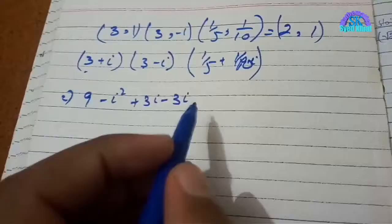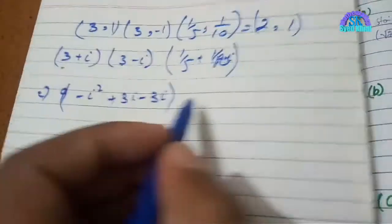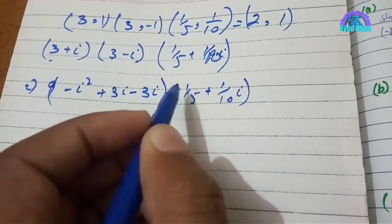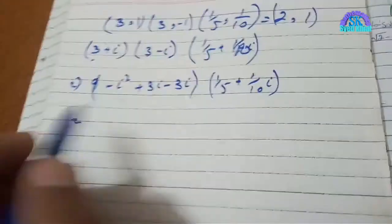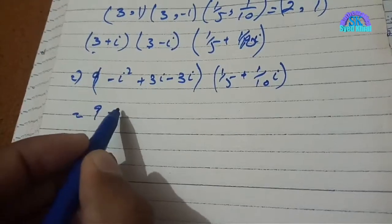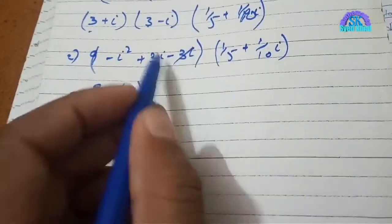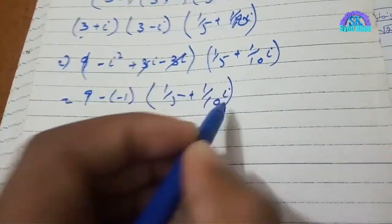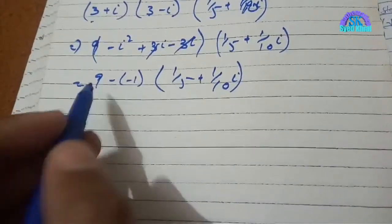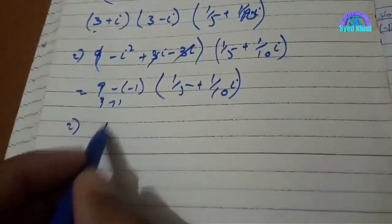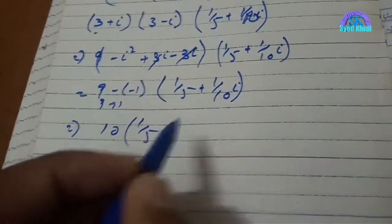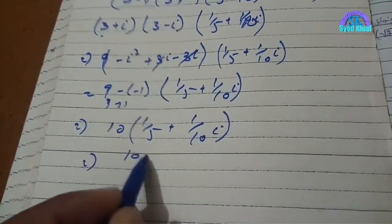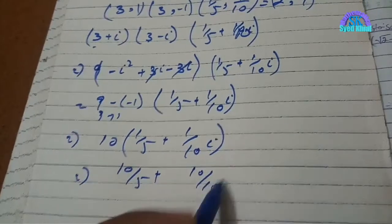9 minus i squared minus one, 9 minus negative 1. 3i cancels. We have 1/5 plus 1/10 iota. 9 plus 1 is 10, giving us 2/1 and 5 plus 1/10 iota, which simplifies to 10/5 plus 10/10 iota equals 2 plus iota.